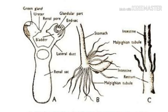Excretory organs are antennary glands or green glands in prawns, and coxal glands in scorpions. Malpighian tubules are the excretory organs in insects, opening into the gut. Excretory matter is ammonia in aquatic animals and uric acid in land animals.